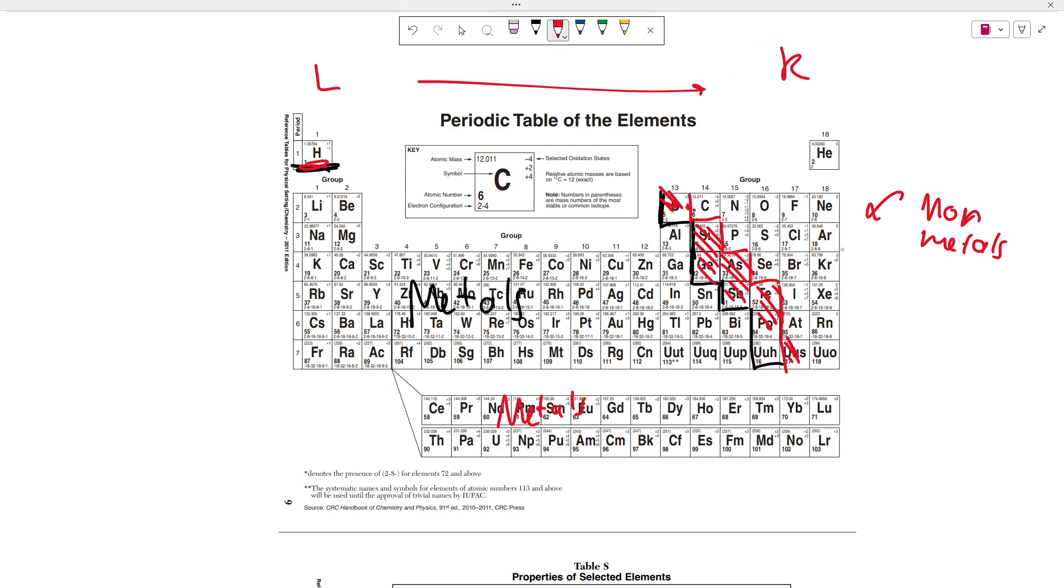And that should make sense because what's on the right of the periodic table of elements? Metals. What's on the left? Non-metals. So the metallic character decreases from left to right.